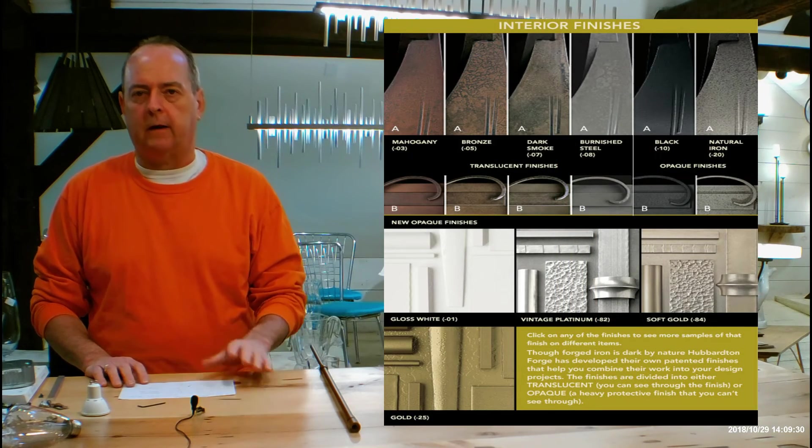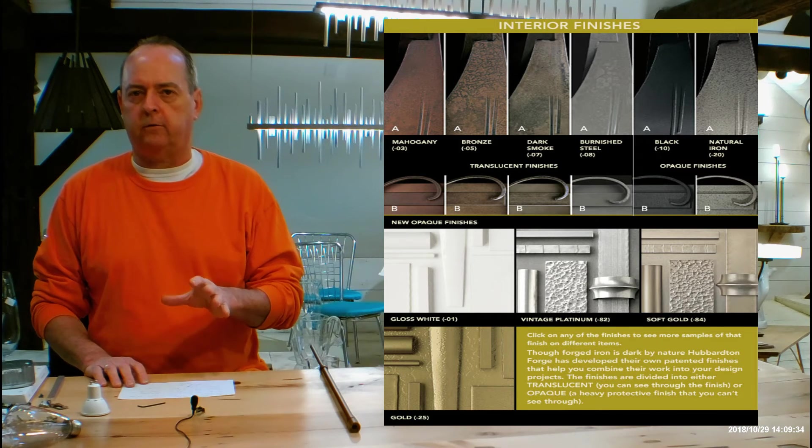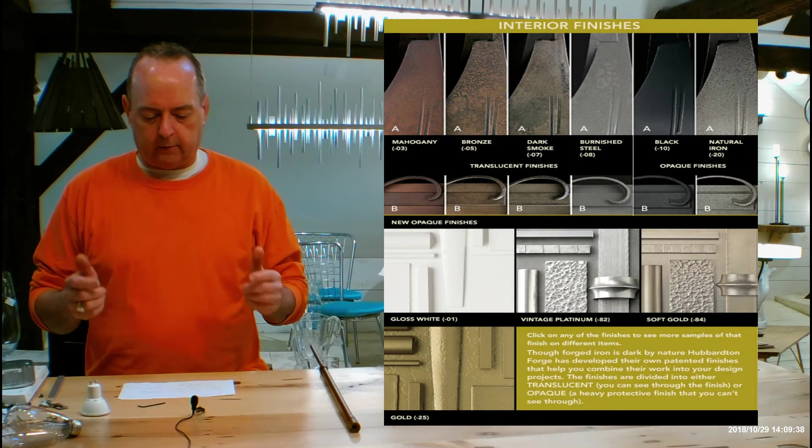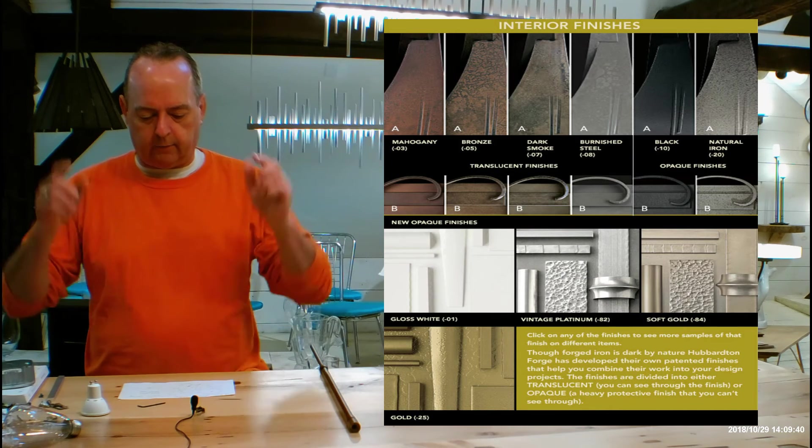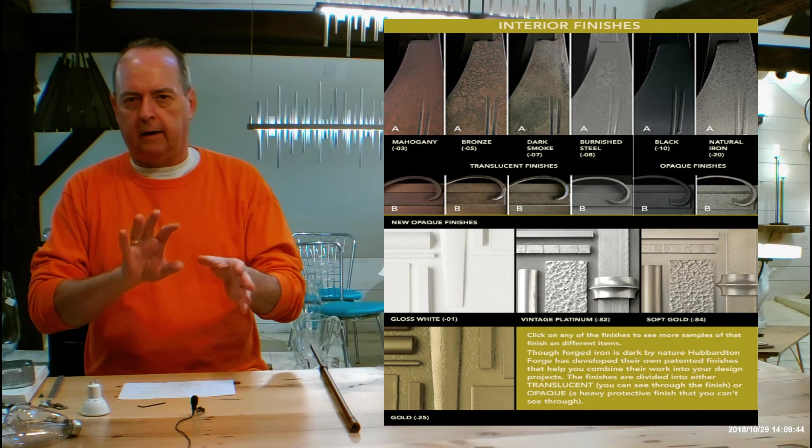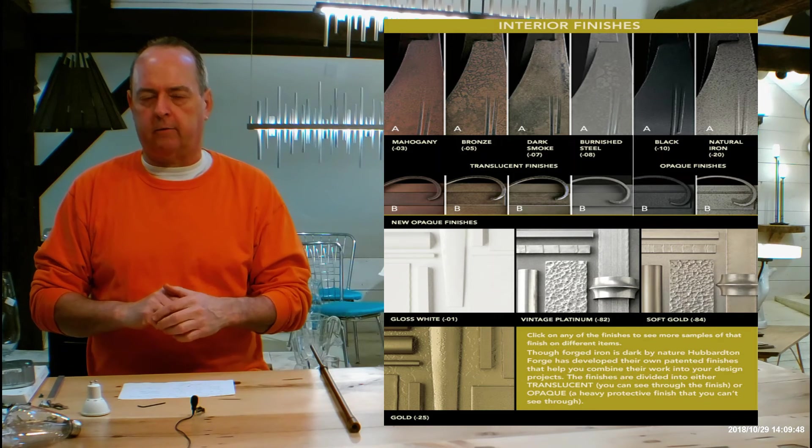There's going to be a video at the top of that page. It's me talking to you about the differences in Hubberton Forge finishes, how they can look on different types of forging. And this fixture is going to be, if you scroll down, there's a chart. The chart has pictures with the letter A on them, pictures with the letter B on them, showing you a range you can expect to see on heavy forging.